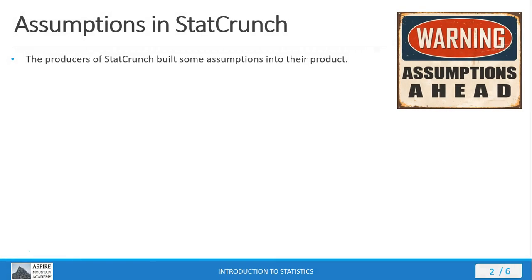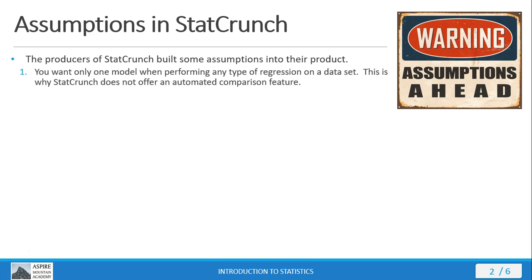Whoever built the code for StatCrunch built some assumptions into their product. First, they're assuming that when you're using StatCrunch, you're only going to want one model when performing any type of regression on a dataset. And this is why there's no automated comparison feature inside StatCrunch.